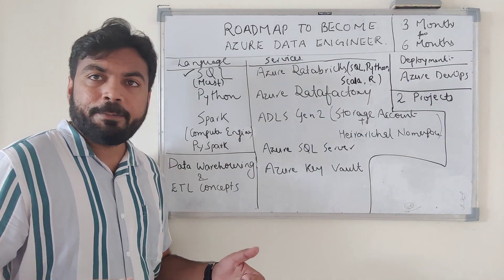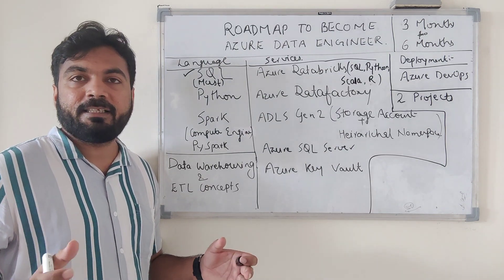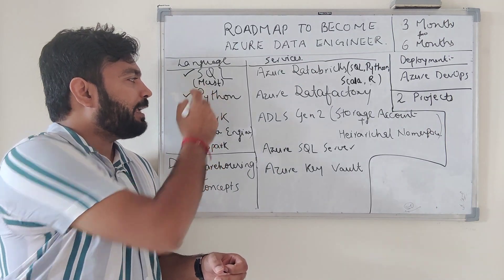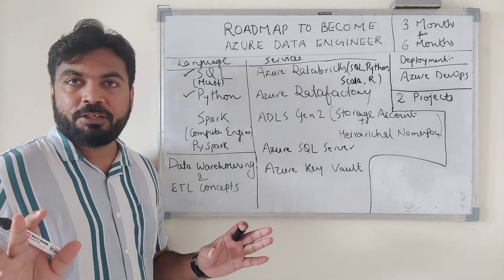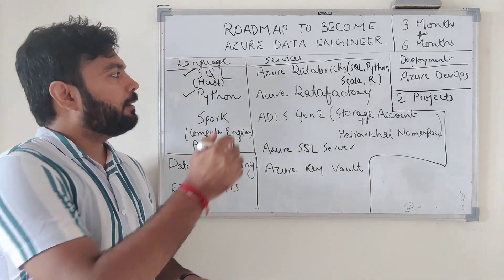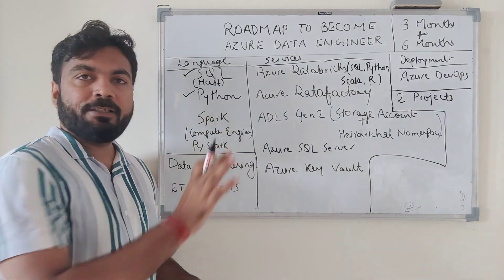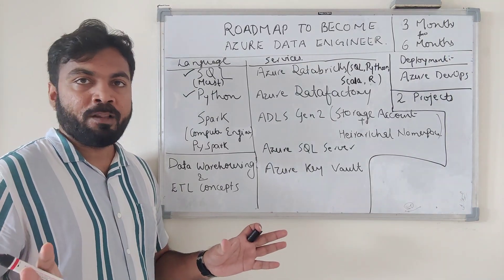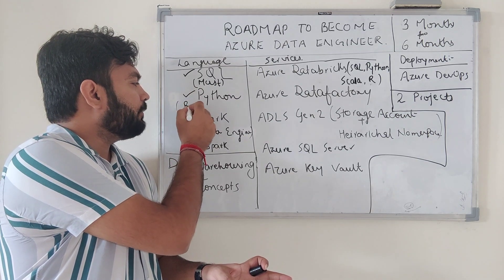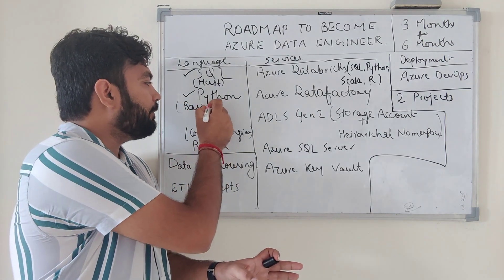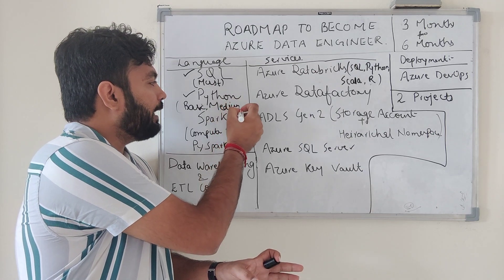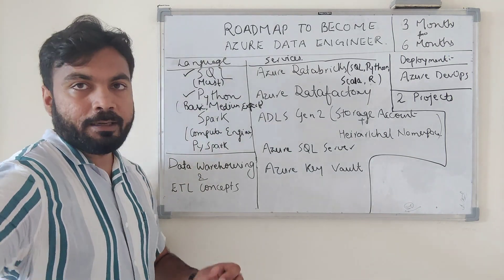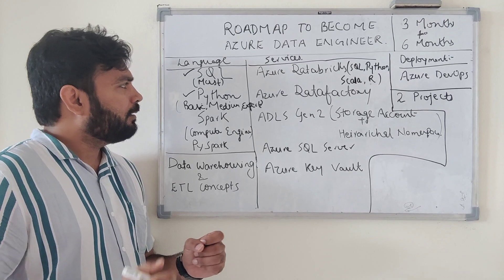Apart from SQL, we need a scripting language for automating our data pipelines. Since data engineers are responsible for creating data pipelines, that scripting language is Python. Python is the most in-demand language. SQL is a must, but Python is not strictly required — however, if you know Python, you will always have an extra edge. Basic level is good, medium level is better, and expert level is the best.